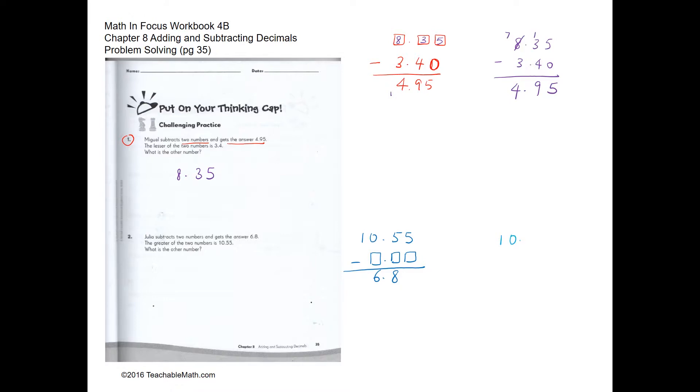Take the difference between 10.55 and 6.8. So we are going to regroup. So this would be 3.75. So the answer will be 3.75.